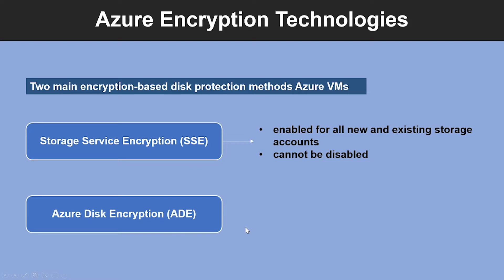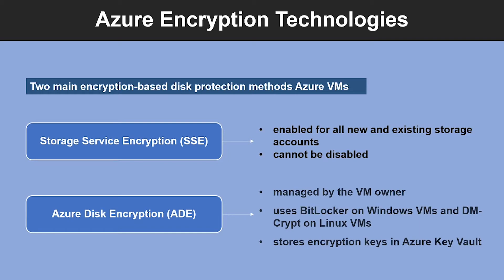Now let's understand Azure Disk Encryption in detail. Azure Disk Encryption is managed by the VM owner. It controls the encryption of Windows and Linux VMs using BitLocker on Windows VMs and DM-Crypt on Linux VMs. ADE ensures that all data on VM disk are encrypted at rest in Azure Storage, and ADE is required for VMs backed up to the Recovery Services Vault. With Azure Disk Encryption, VMs boot under customer-controlled keys and policies, and ADE is integrated with Azure Key Vault for the management of these disk encryption keys and secrets. Note that ADE does not support the encryption of basic tier VMs and you cannot use an on-premises key management service with ADE.